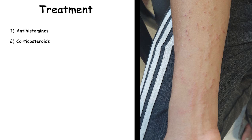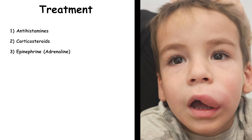The third class of medication is epinephrine, or adrenaline. This is the first-line treatment for severe allergic reactions, particularly anaphylaxis, which is a potentially life-threatening condition. Epinephrine is given as an intramuscular injection, often with an auto-injector like an EpiPen. It rapidly reverses the symptoms of anaphylaxis by constricting blood vessels, raising blood pressure, and relaxing airway muscles and reducing swelling. It is very important that epinephrine should be administered immediately during an anaphylactic reaction, under the supervision of a doctor.